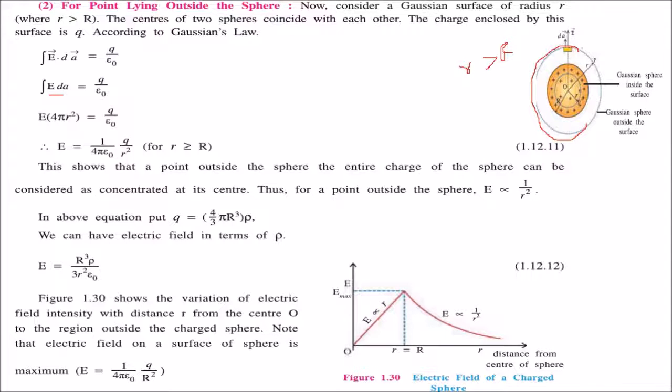The surface area of this Gaussian surface is 4πr². The electric field is constant at all points, so E × 4πr² = q/ε₀. Therefore, E = q/(4πε₀r²), or E = (1/4πε₀)(q/r²).